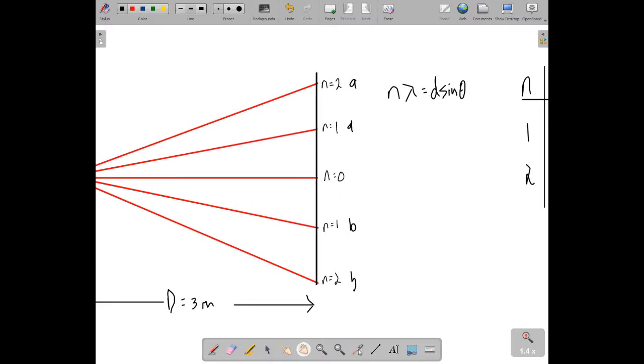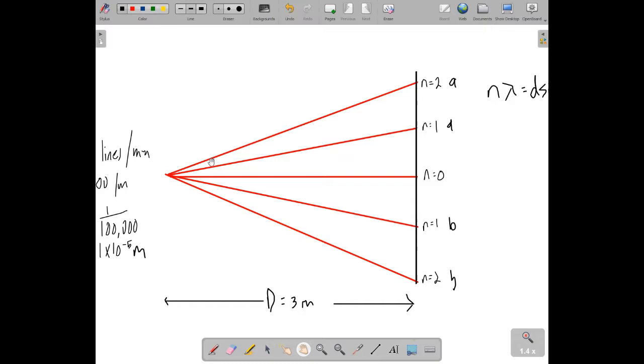So the equation that defines where the bright fringes will appear is n lambda equals d sine theta. We're going to start off by finding the angle, and that angle is the angle over on this side.